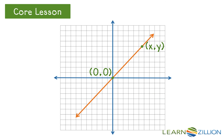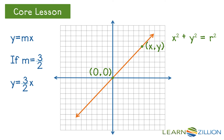To be clear, just like y equals mx is the equation of any line that passes through the origin with slope m, x squared plus y squared equals r squared is the equation of any circle centered at the origin with radius r. To describe a specific line with the equation y equals mx, we first need to know the slope. For example, if I have a line with slope 3 over 2, the equation of the line is y equals 3 over 2 x. We can use this equation to find other points on the line or to determine if a point is not on the line. Likewise, to describe a specific circle with x squared plus y squared equals r squared, you must first know the radius.